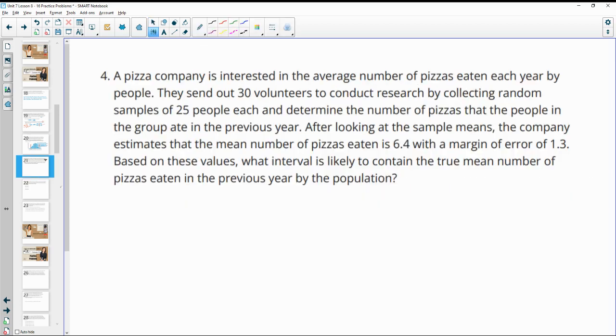Number four, a pizza company is interested in the average number of pizzas eaten each year by people. They send out 30 volunteers to conduct research by collecting random samples of 25 people each and determine the number of pizzas that the people in the group ate in the previous year. After looking at the sample means, the company estimates that the mean number of pizzas eaten is 6.4 with a margin of error of 1.3. Based on these values, what interval is likely to contain the true mean of the data.